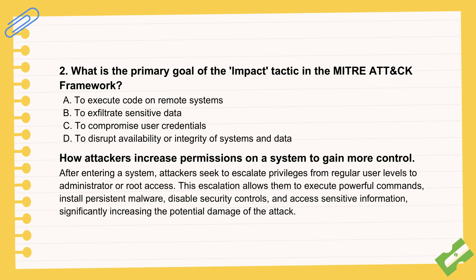Shifting focus, the next question asks about the impact tactic. Impact is often the visible damage part. The source says its main goal is messing with the availability or integrity of systems, services, or data. Think about wiping data completely, ransomware encrypting files so you can't use them, or shutting down critical systems. It's about directly harming or disrupting the target's operations.